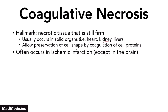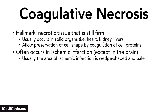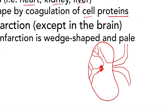Usually, because this is an ischemic infarction, the area of the infarction is going to have a wedge shape and it's going to be very pale. Let's say this is our kidney. You have the renal arteries going in, supplying the rest of the kidney. Let's say at some point you get an ischemic infarction, and because you are infarcting that area, you cannot get blood going that way. Everything that area is supplying distal to the infarction is going to die off — and that's where you get the wedge shape. This is all dead tissue.